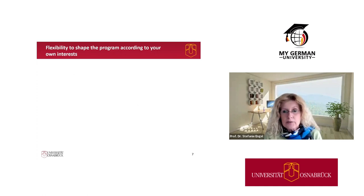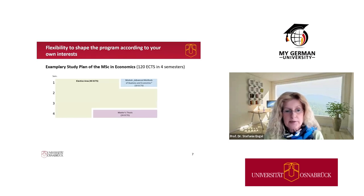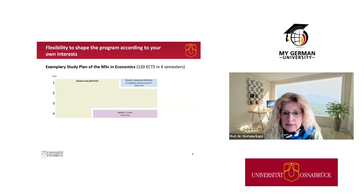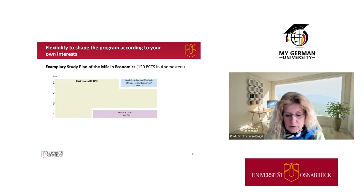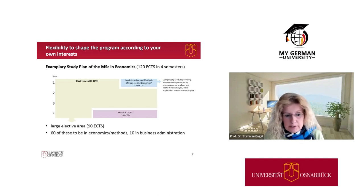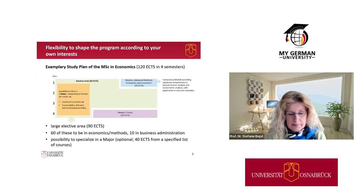There is quite some flexibility to shape the program according to your own interest. Here is an exemplary study plan: you have to take 100 ECTS in total, usually over four semesters. There is really only one compulsory module — Advanced Methods of Business and Economics at 10 ECTS — and of course you write a master's thesis worth 20 ECTS. The remaining 70 ECTS are an elective area. Of those, 60 ECTS must be in economics and methods, and 10 in business administration. Within this elective area you have the possibility to form a major.